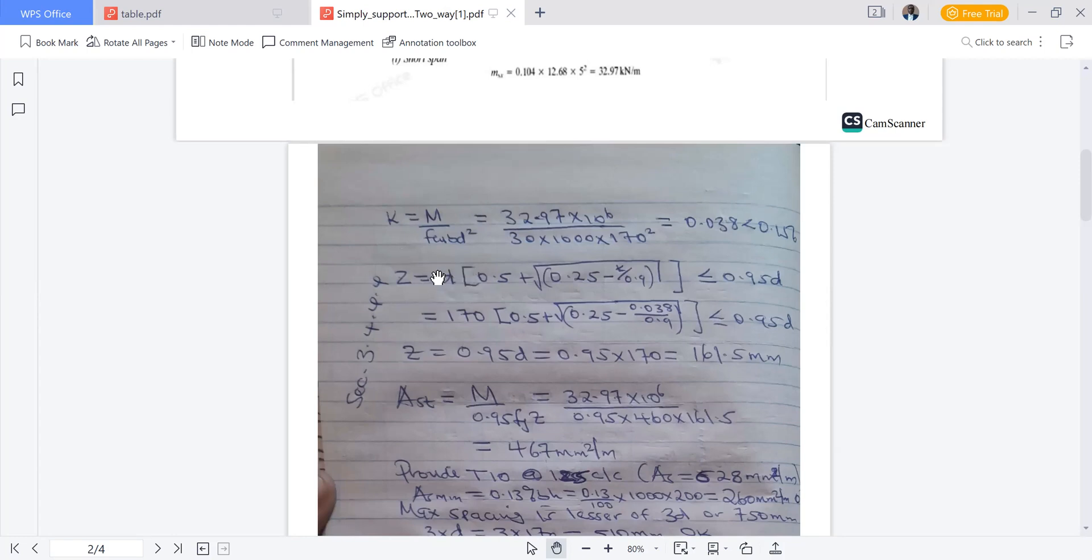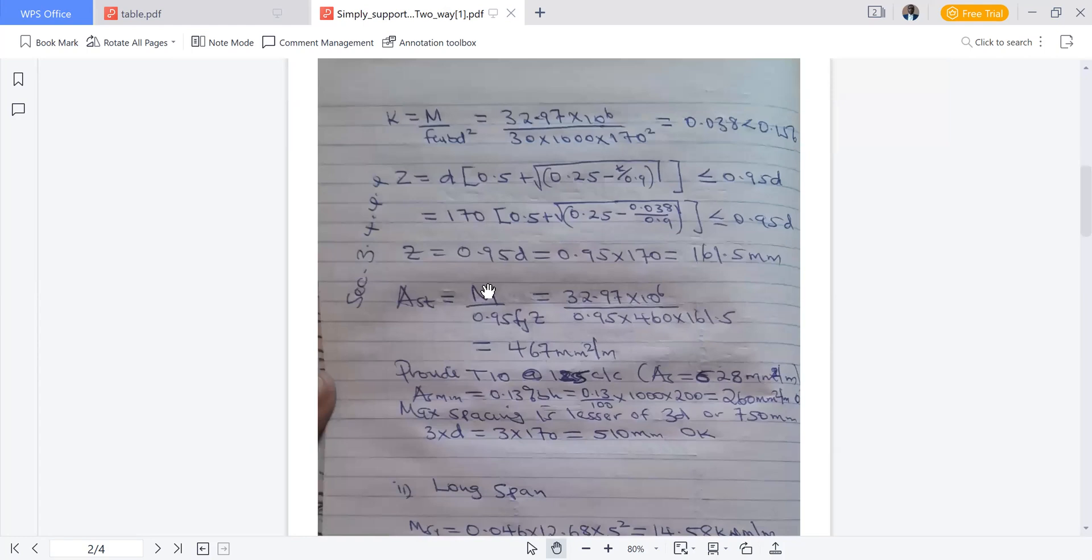Then we go to arm z. We know it is d times that, but should not be more than 0.95d. After computing, this value will be more than 0.95d, so we restrict z to 0.95d which is 161.5. The area of steel is moment divided by 0.95 strength of steel times arm z, which is 32.97 times 10^6 over 0.95 times 460 times 161.5, giving us 467 millimeter squared per meter.